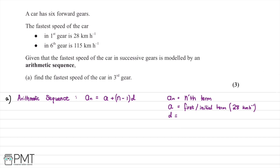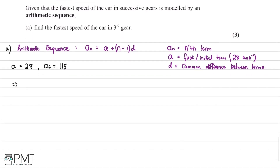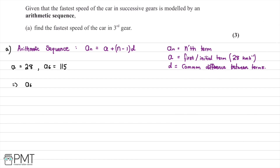D is the common difference between terms, and at this stage we don't know what D is. For our situation, A equals 28 and we also know that the sixth term, A6, is going to be equal to 115. So we can say that A6, which equals 115, is equal to 28 plus (6 minus 1) multiplied by D. We can rearrange this equation and solve for D.